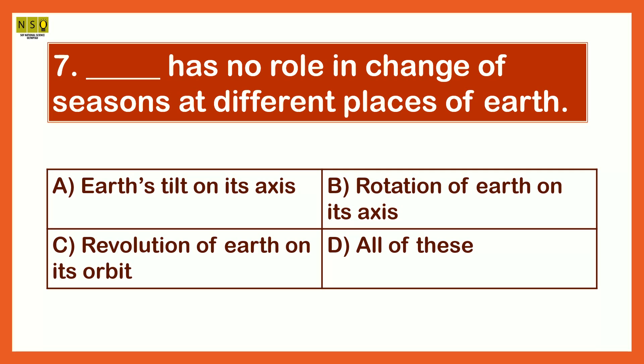Option C, Revolution of Earth on its orbit. Option D, All of these. The answer is Rotation of Earth on its axis. The rotation of Earth on its axis has no role in change of seasons at different places of Earth.